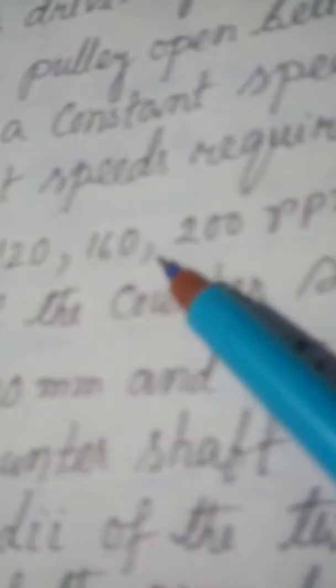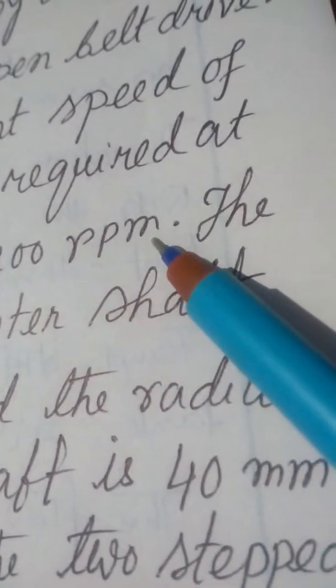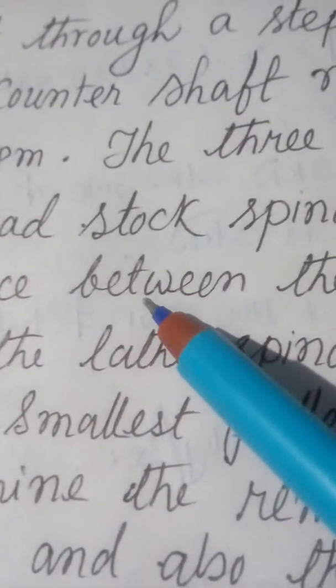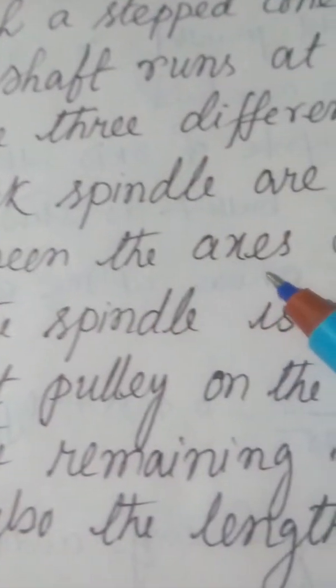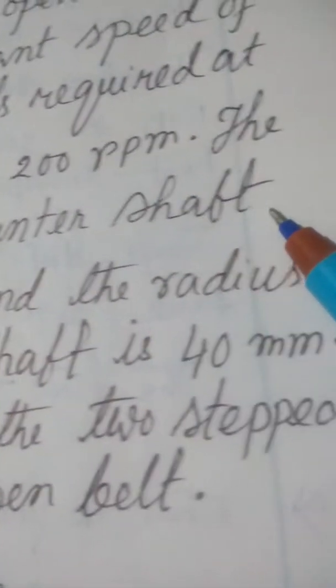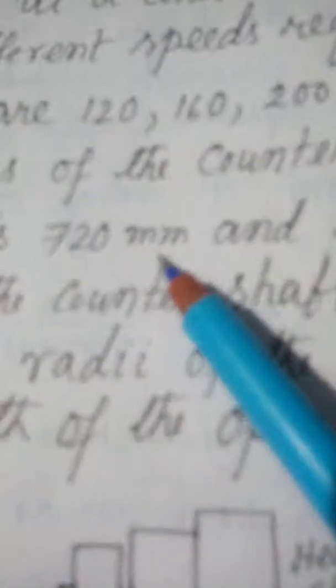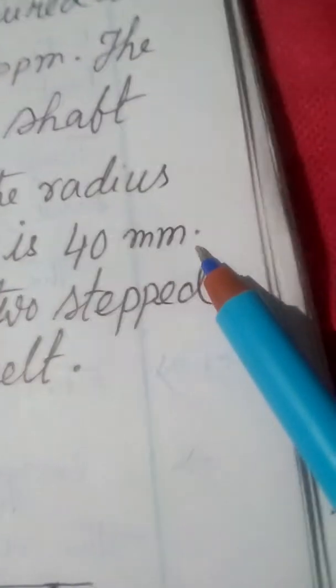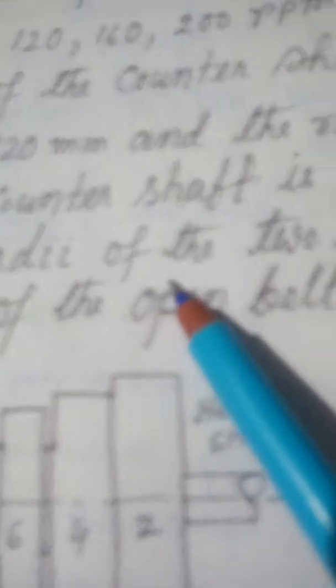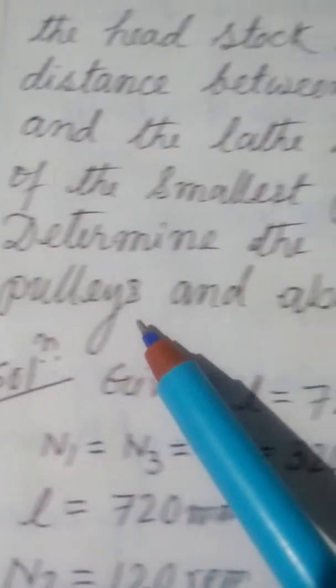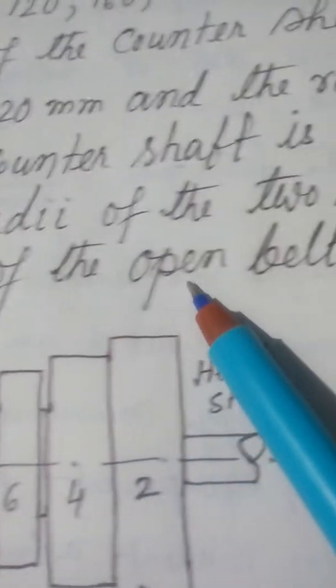The three different speeds required at the headstock spindle are 120, 160, and 200 RPM respectively. The distance between the axis of the counter shaft and the lathe spindle is 720mm, and the radius of the smallest pulley on the counter shaft is 40mm.